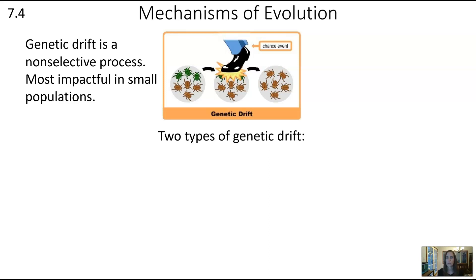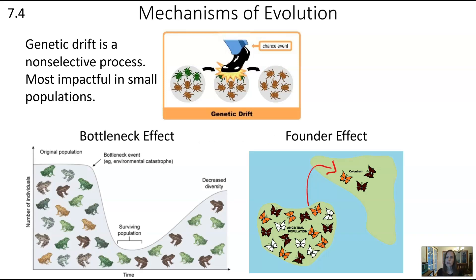There are two types of genetic drift you need to be aware of: the bottleneck effect and the founder effect. These are similar in that they result in a very small population, and it's small populations that are impacted by random changes. In a bottleneck effect, it's like shaking a bottle full of different colored marbles — only a few make it through. Here, an environmental catastrophe kills off a large number of frogs, and the surviving population does not have the same ratio of genes as the original. Even as the population rebounds, it retains the diversity represented by those few individuals that made it through.